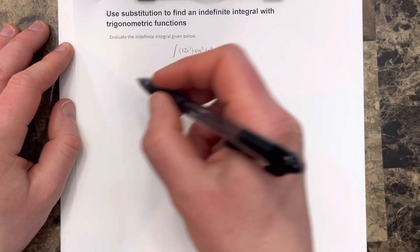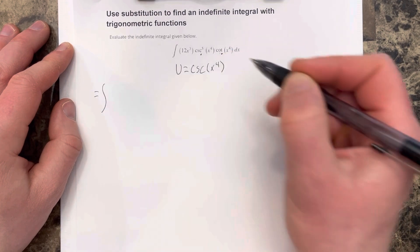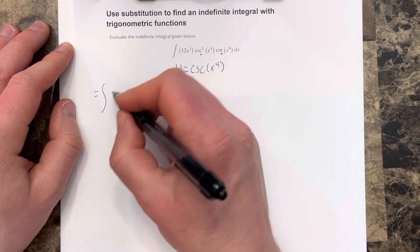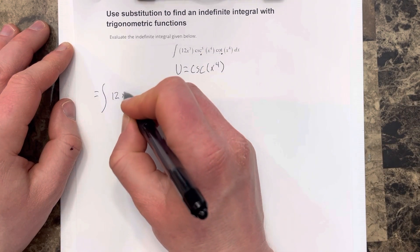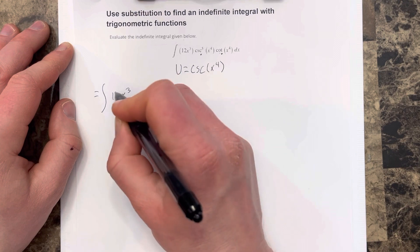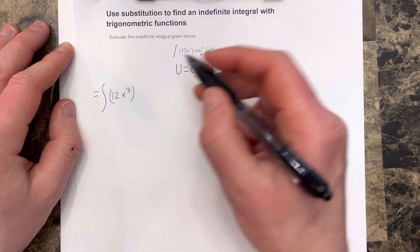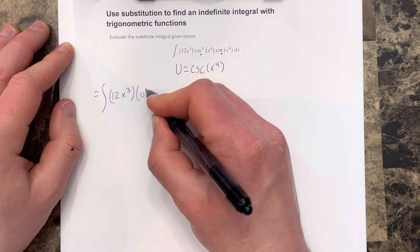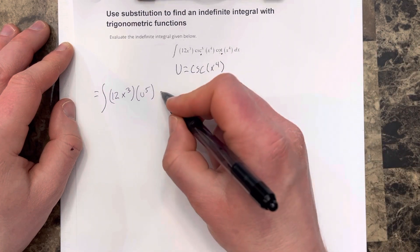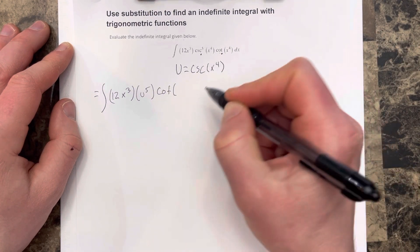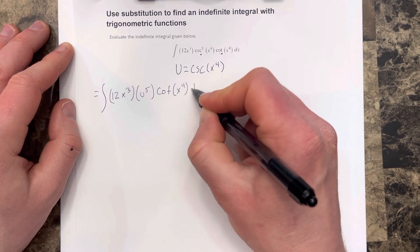Substituting in, this integral becomes the integral of 12x cubed times u to the fifth cotangent x to the fourth dx.